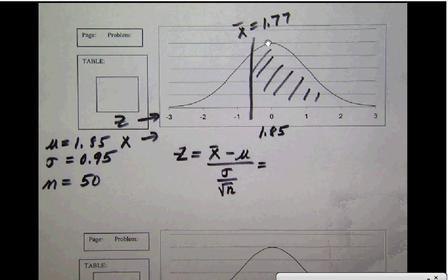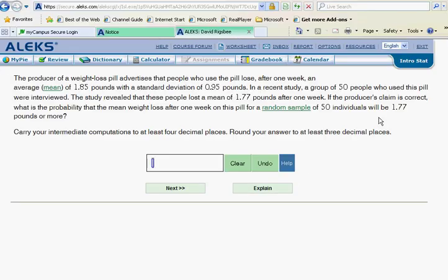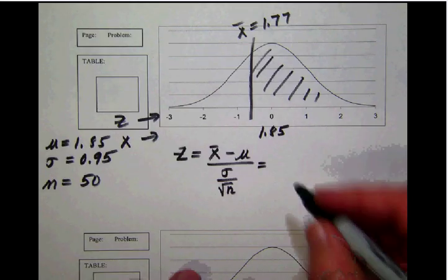It says right here the random sample of 50 individuals will be 1.77—this is their mean weight loss, 1.77 pounds or more. So we plug that in: 1.77.